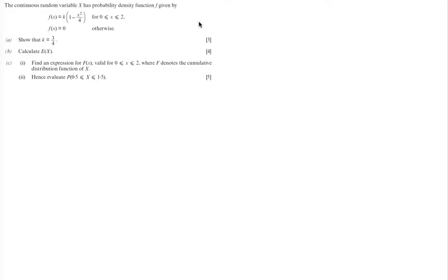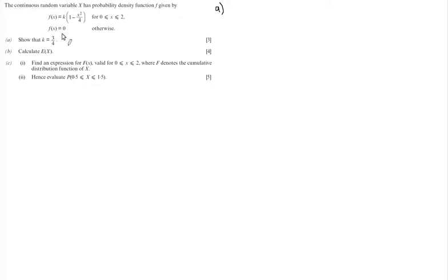The continuous random variable X has probability density function given by f(x) = k times (1 minus x squared over 4) for x between 0 and 2, or f(x) = 0 otherwise. Part A: we want to show that k is equal to three quarters.